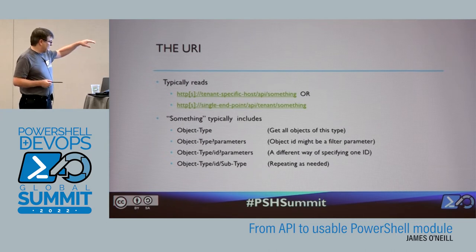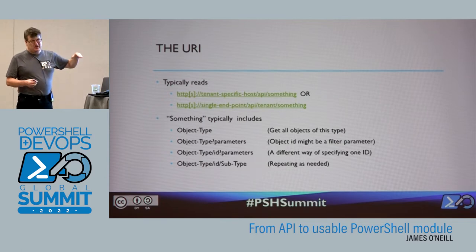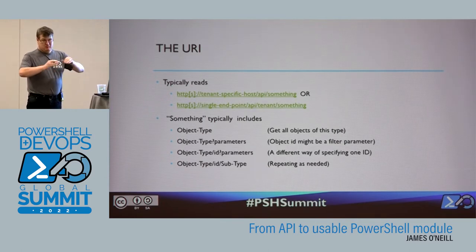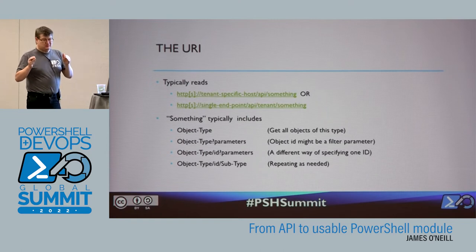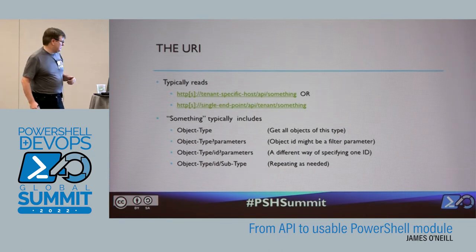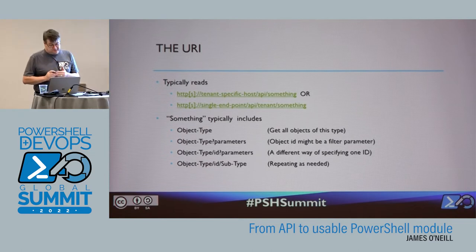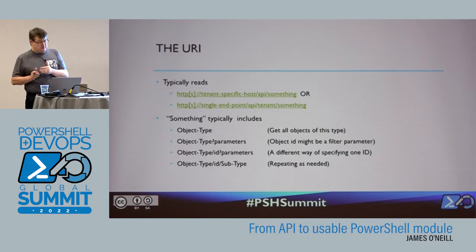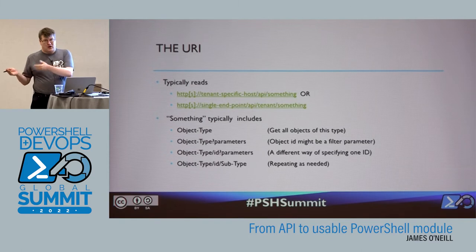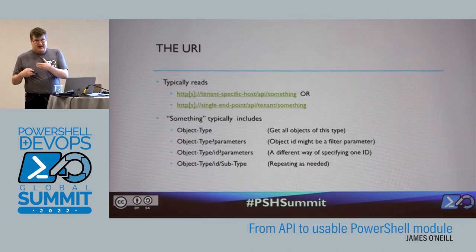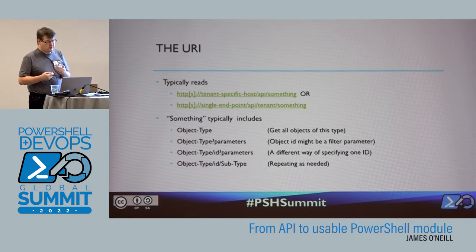Self-contained requests. The URIs typically look something like this: there'll be HTTP or HTTPS, and either you get a tenant-specific URL or there's one generic host name and the tenant is identified somewhere in the parameters and the URI path. Commonly with these APIs they'll indicate what type of object we're going to request, and if you request the object type on its own, the common behavior is to give you every one of those objects. Then we can specify parameters — a filter parameter or an ID — and this will vary depending on the particular API.